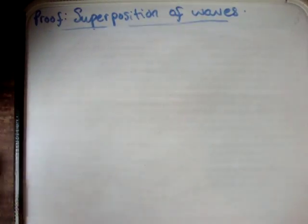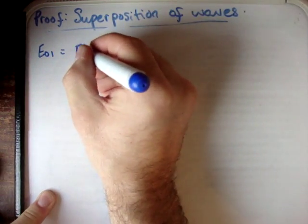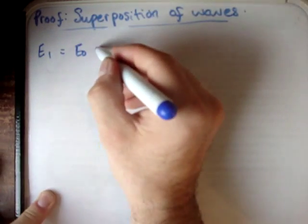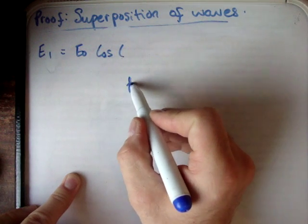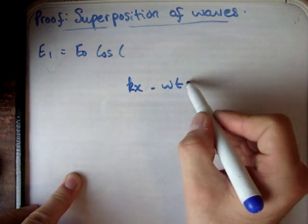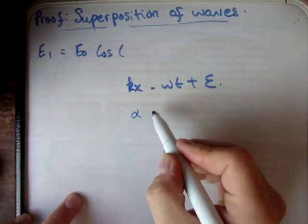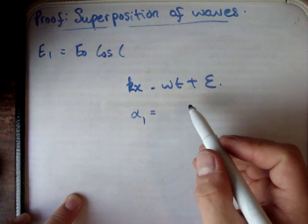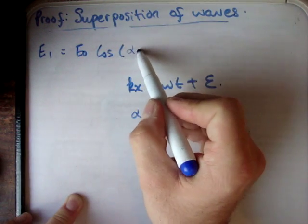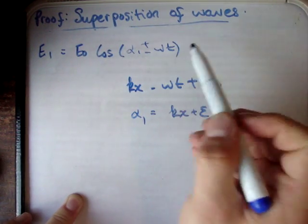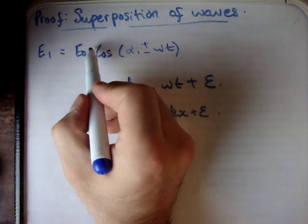Let's define a new variable. I'm going to say E1 is equal to E01 times cosine of kx minus omega t plus epsilon. For convenience, I'll define a new variable alpha, where alpha 1 equals kx plus epsilon. So I'm going to have alpha 1 plus or minus omega t. Similarly, E2 would be the same form, swapping the subscripts.